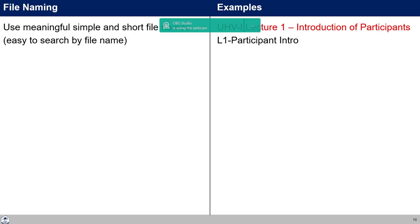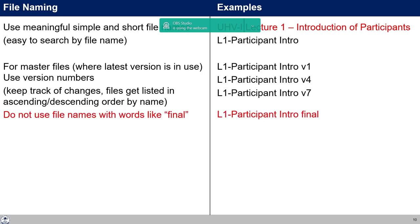File naming is quite important to keep files organized and find them when needed. Use meaningful, simple, and short names that you can remember and search for. File names longer than 30 characters can cause problems when copying or taking backups. For example, using 'L1 Participant Intro' is a short name that works well. For master files where only the latest version is kept, a simple short name is sufficient.